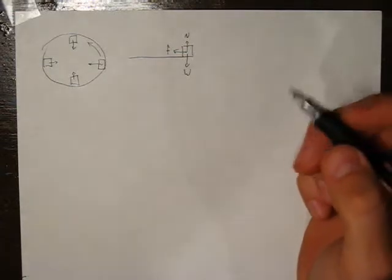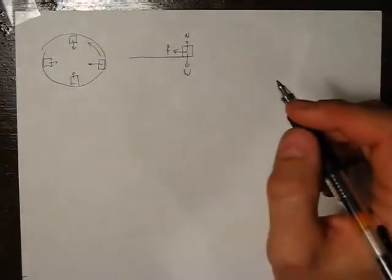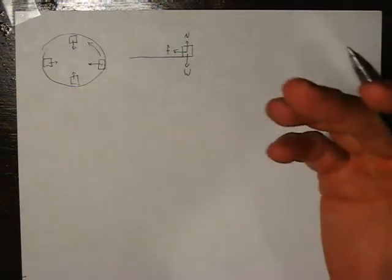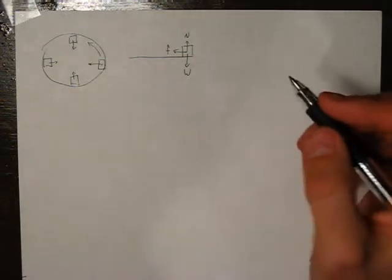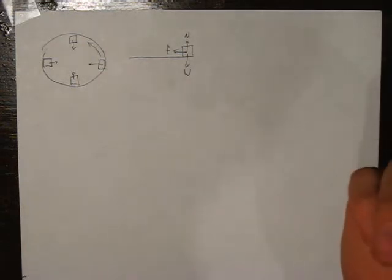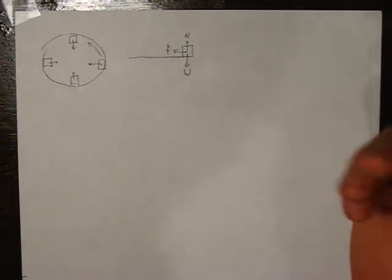Now in this case, well in all circular cases, the centripetal force is just the name given to whatever force happens to be keeping the thing going in a circle. In this case, that centripetal force happens to be paid by friction, but it really could be anything.